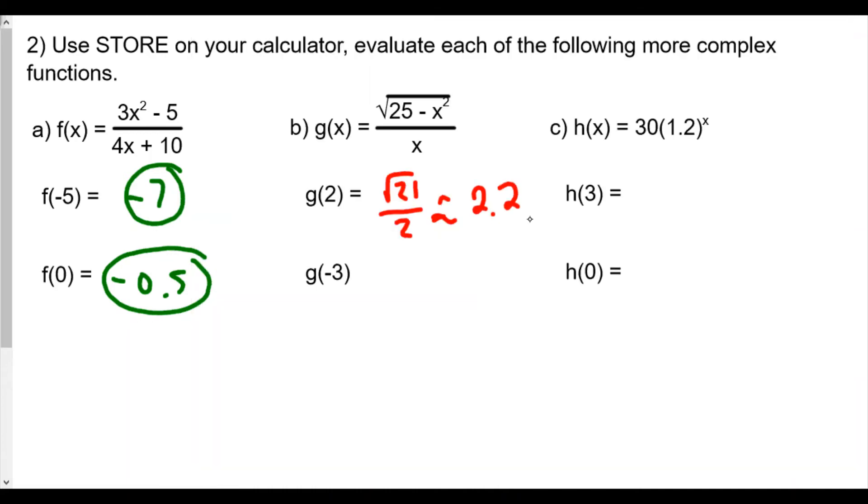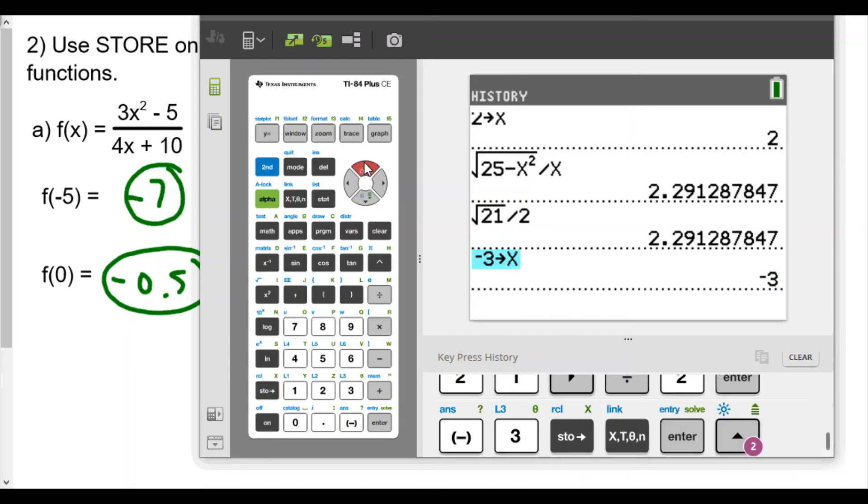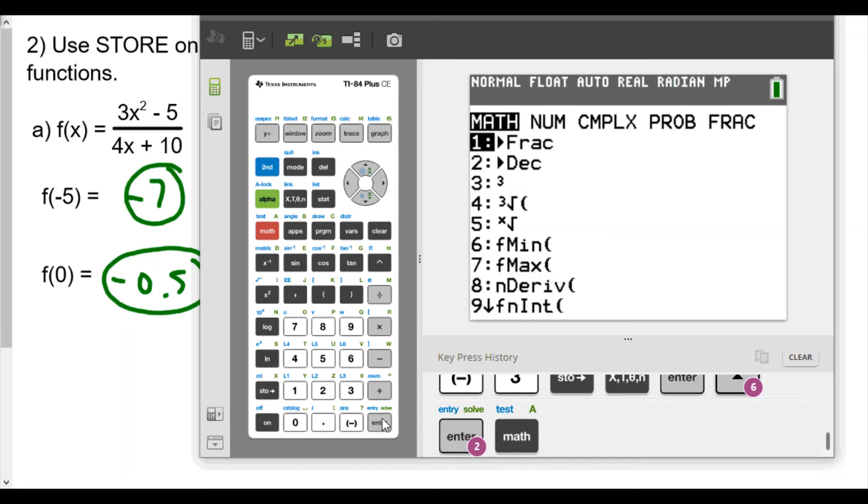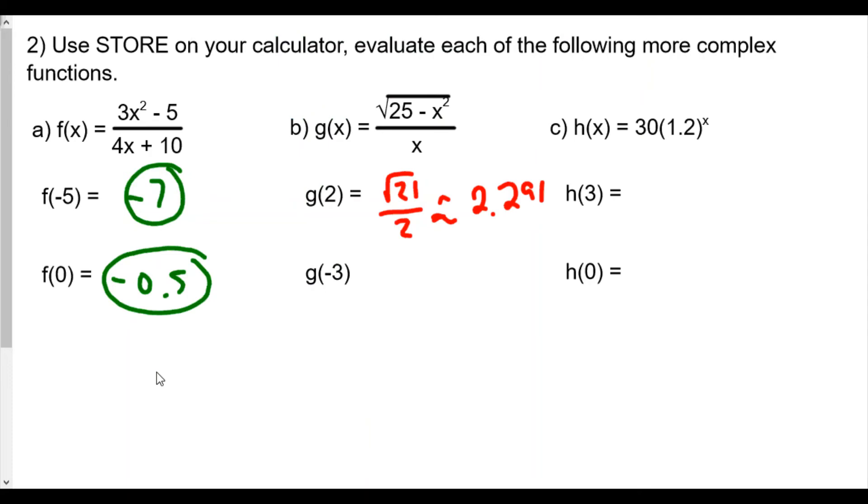Now let's try negative 3. Store, hit up, negative 3, store x, enter. We're going to move this up here to copy the expression. Enter and enter again, and we get negative 1.33, which we know is repeating decimal. Now to change repeating decimal into a fraction, we hit math, then enter twice, and we get negative four thirds. So now we have negative four thirds, which is also equal to negative 1.3 repeating.